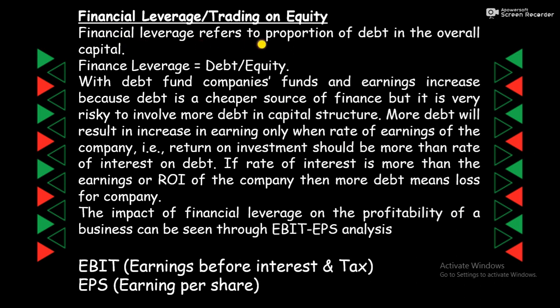Financial leverage refers to the proportion of debt in the overall capital — कितना debt हमने अपनी total capital में use करना है. Capital structure में कितना equity का proportion लेना है और कितना debt का proportion लेना है — यही capital structure का formula रहता है. Financial leverage is equal to debt divided by equity. With debt, a company's earnings increase because debt is a cheaper source of finance, but it is very risky to involve more debt in capital structure. More debt will increase earnings only when the company's return on investment (ROI) is more than the rate of interest on debt. If the rate of interest is more than the ROI, then more debt means loss for the company.